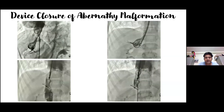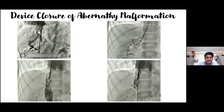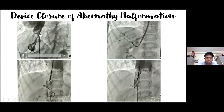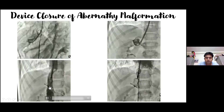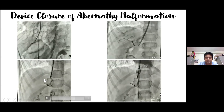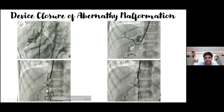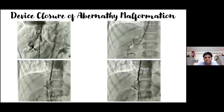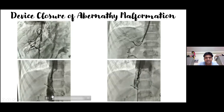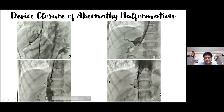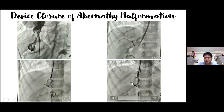We planned closure of the abnormal connection. A braided sheath was introduced from the neck line. You can see on the simultaneous injection of the abnormal connection and IVC the landing zone of the occluder. We closed the abnormal connection with an 18 x 60 mm lite-state duct occluder, preferred due to the shape of the venous connection. After closure, the IVC injection shows no obstruction in the IVC, and the entire abnormal connection is totally occluded.